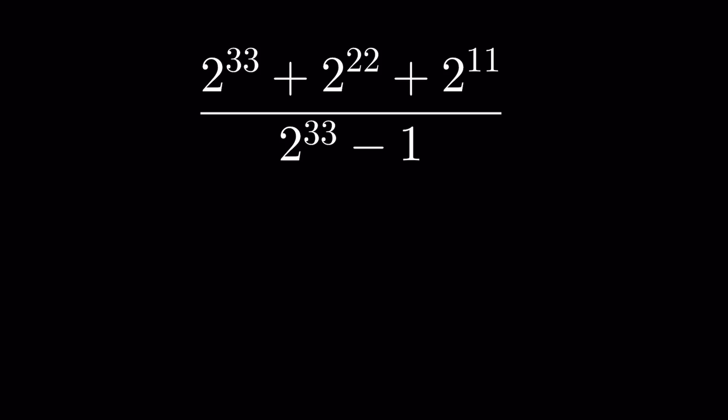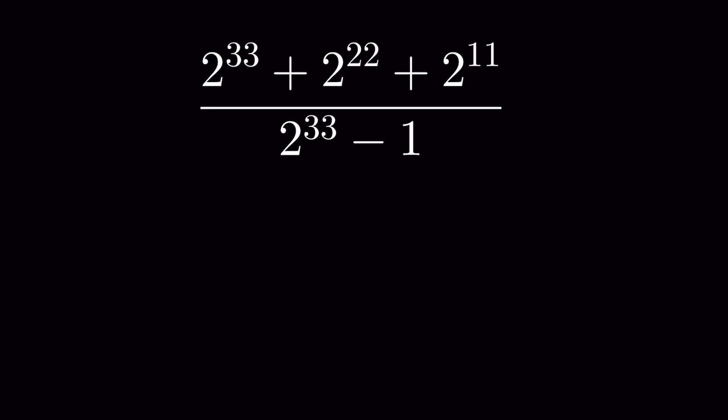We have to solve: 2 raised to the power of 33, plus 2 raised to the power of 22, plus 2 raised to the power of 11, upon 2 raised to the power of 33 minus 1 — without using a calculator. So let's try.